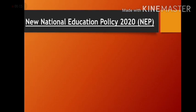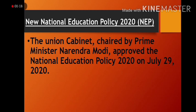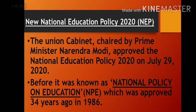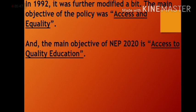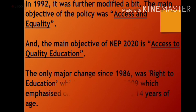The union cabinet, chaired by Prime Minister Narendra Modi, approved the National Education Policy 2020 on July 29th. Previously it was known as the National Policy on Education (NPE), which was approved 34 years ago in 1986 and further modified in 1992. The main objective of the old policy was access and equality, whereas the main objective of NEP 2020 is access to quality education.